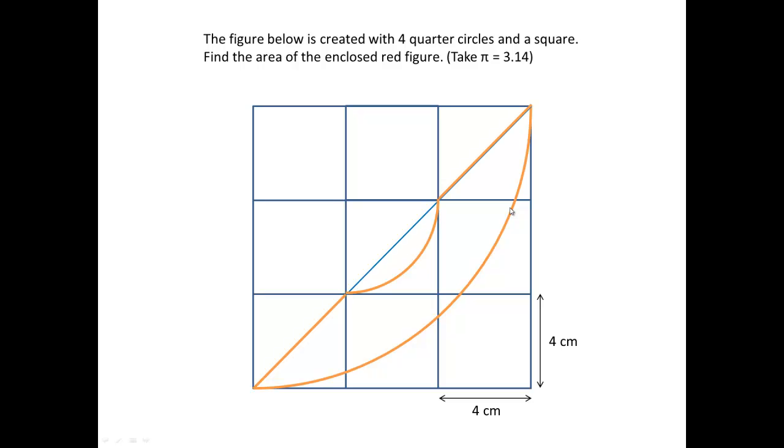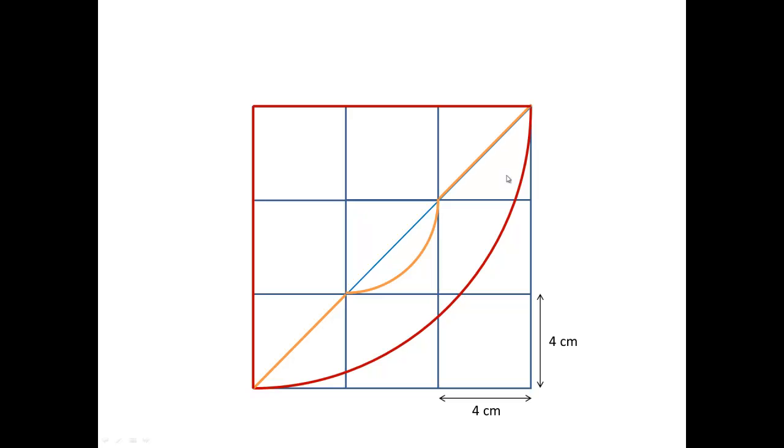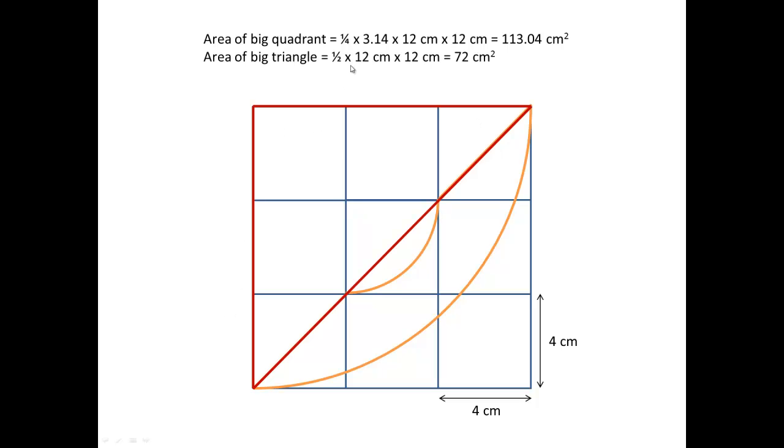To find this watermelon figure, we first find the large quadrant here, which is basically one quarter of a big circle. So, we have one quarter times pi times 12 times 12 to give us 113.04 cm squared. This is the area of the big quadrant. Next, we can find the area of the big triangle here, that will be half times 12 times 12 to give us 72 cm squared.